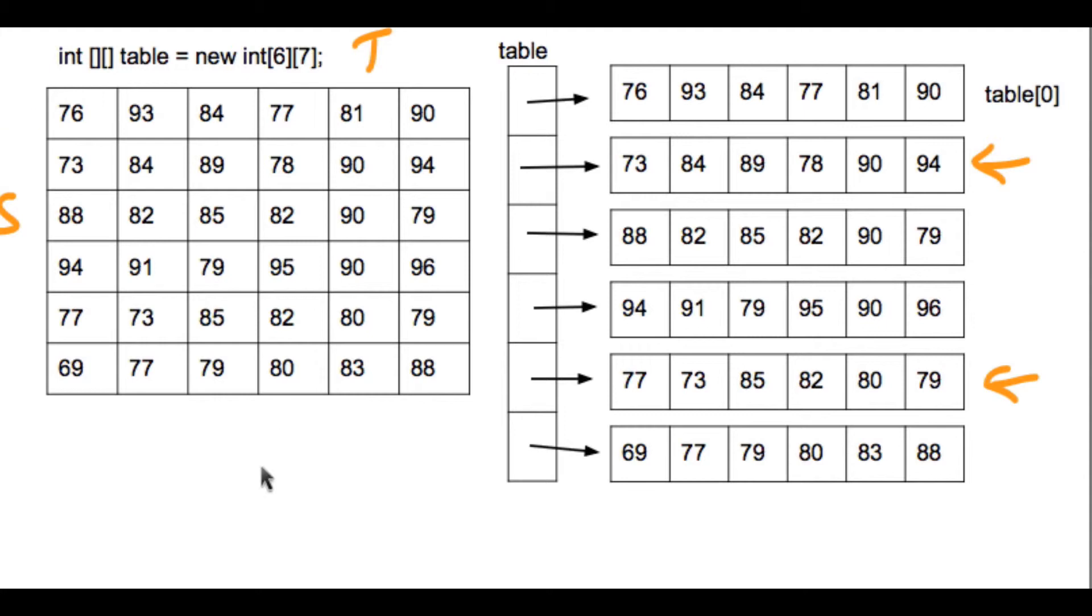But if alternatively I wanted to get the average for a test. So say I wanted to get the average for the 0, 1, 2, 3, 4, 5 test. So in that case, I would want to hold the column constant and move the rows down and move down through the rows, and summing up those values.